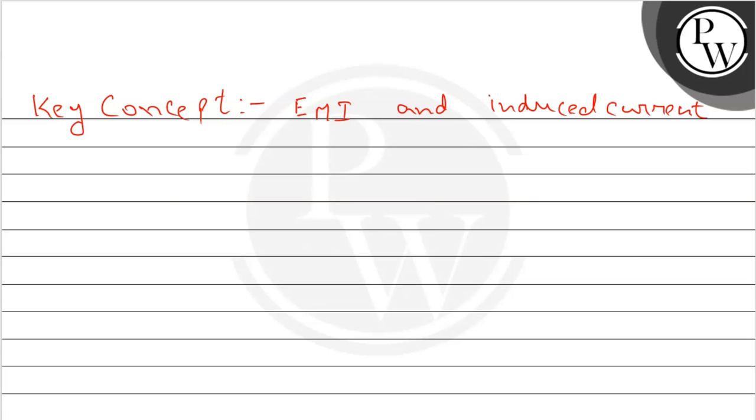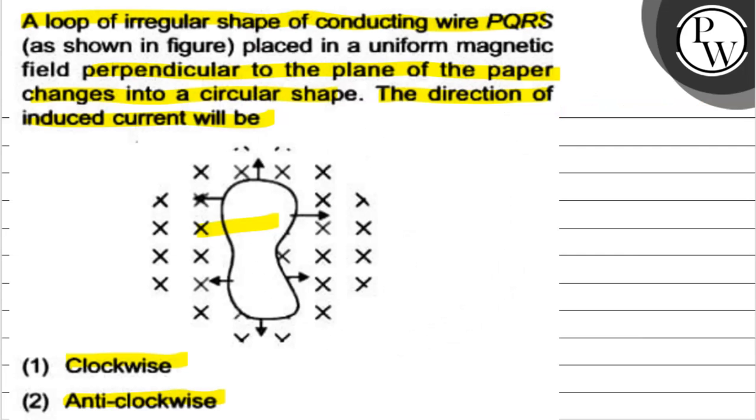Key concept: this question is based on the concept of electromagnetic induction and induced current. This question has a loop of irregular shape PQRS in a uniform magnetic field perpendicularly.